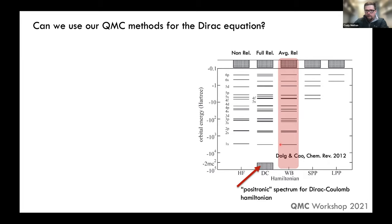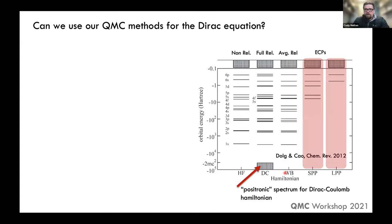There are also scalar relativistic solutions — average relativity — where you neglect the deep positronic spectrum but match the fermionic states of the fully relativistic Dirac spectrum. However, for split states you only match the j-averaged energy. This is what we call scalar or average relativity. The pseudopotentials introduced in week six typically match to a scalar relativistic all-electron Hamiltonian and cannot generate the spin-orbit splitting.